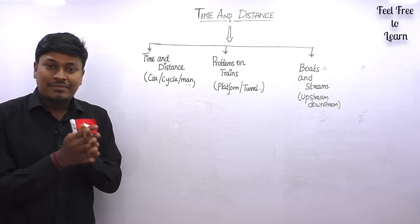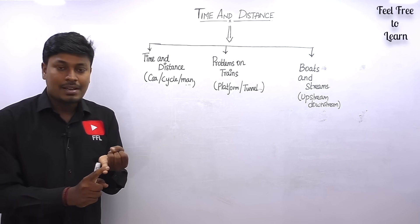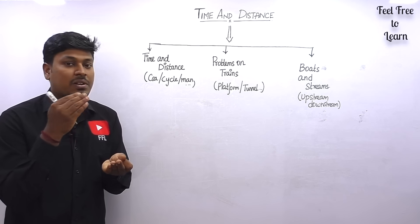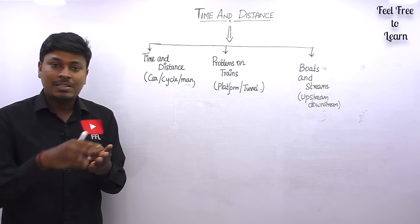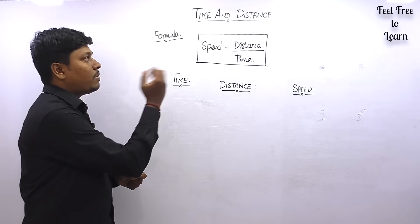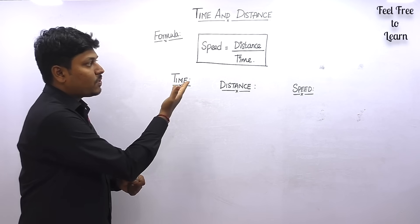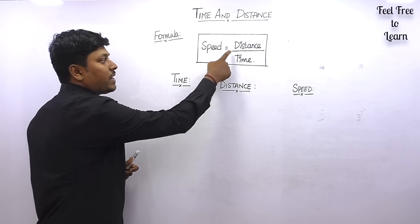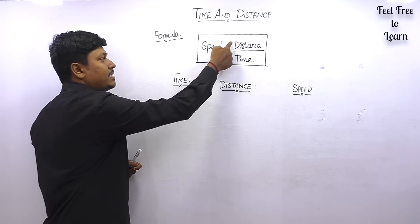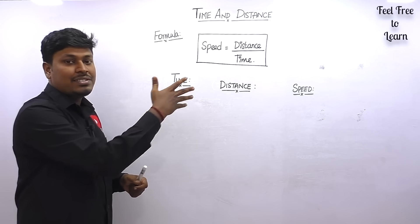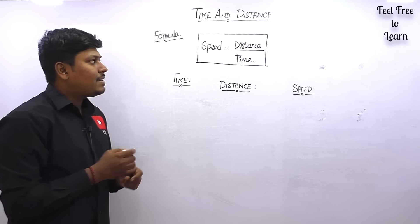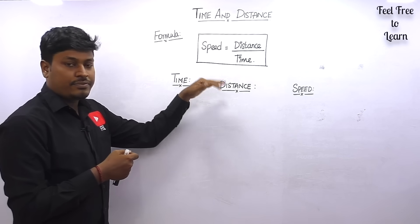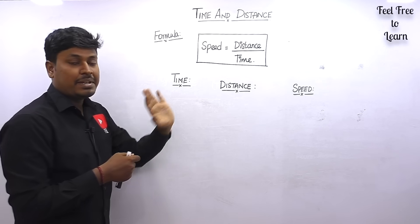To solve questions based on time and distance, you first need to learn the basic formulas and understand the concepts of speed, converting kilometers per hour to meters per second, and concepts on distance and time. The major formula is: speed equals distance divided by time. If you want distance, multiply speed by time. If you want time, divide distance by speed.